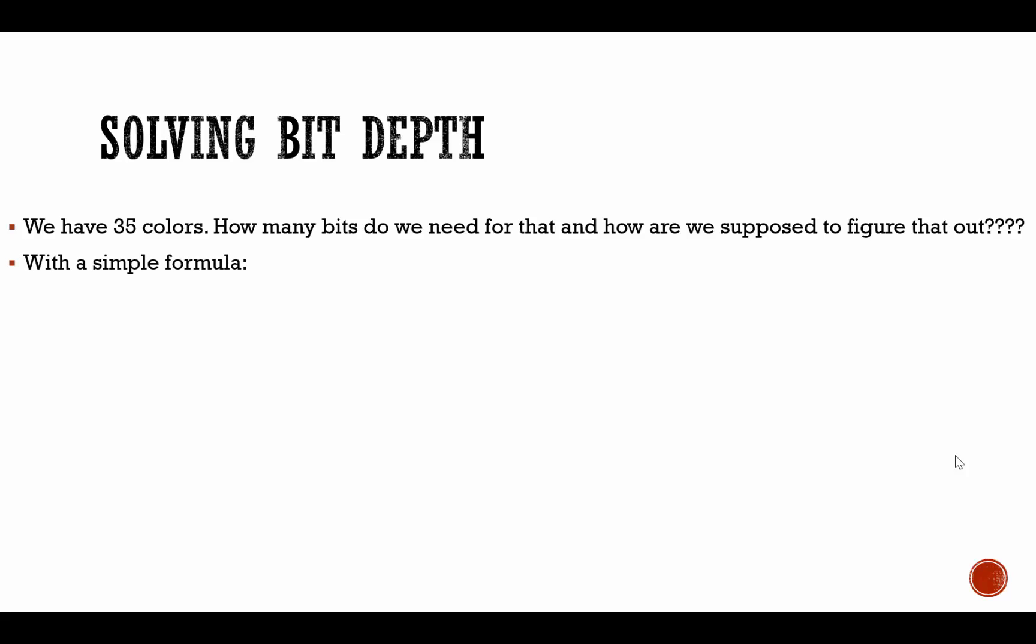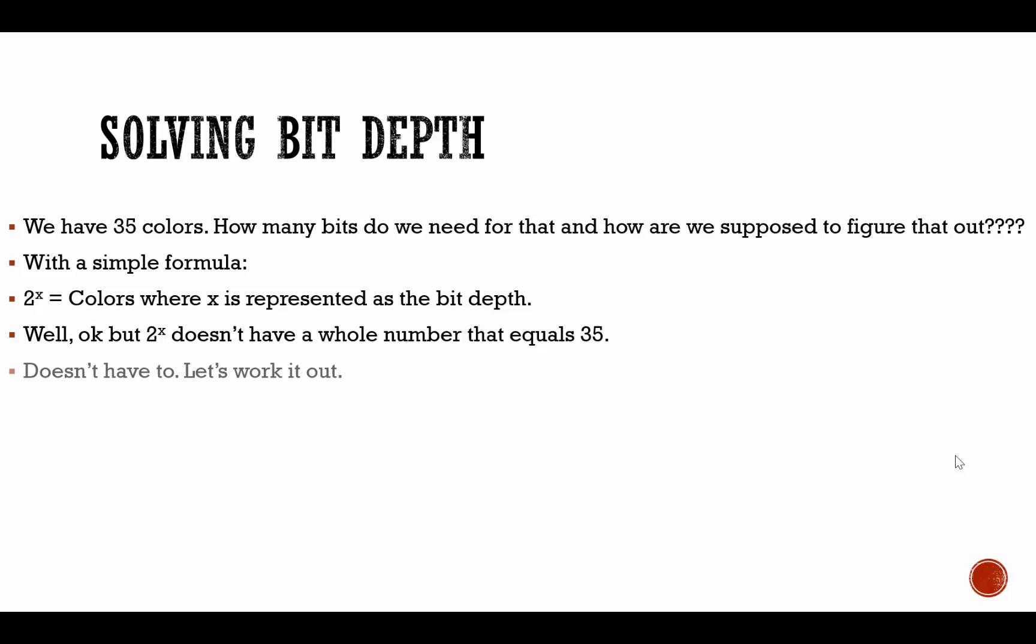With a simple formula where 2 to the power of x equals the amount of colors. Now, that is where x is represented as the bit depth. Now, you may be saying, well, okay, but 2 to the power of x doesn't have a whole number that equals 35. What in the world am I supposed to do? Are we supposed to do 2 to the power of, you know, 4 point something, 5 point something until we get to 35? You don't have to do that. It doesn't have to come out to exactly 35.